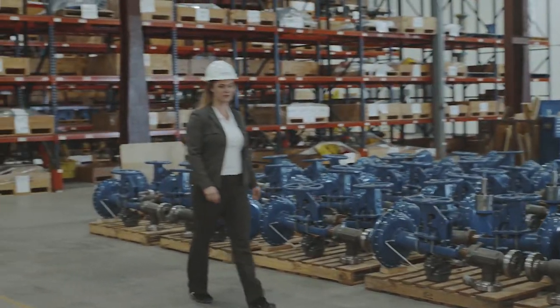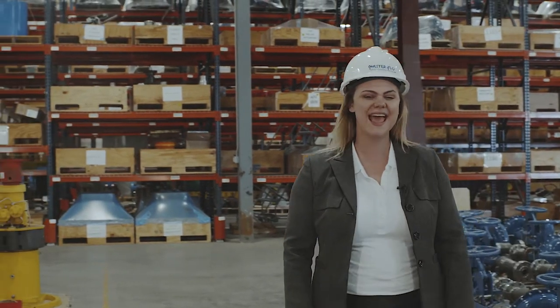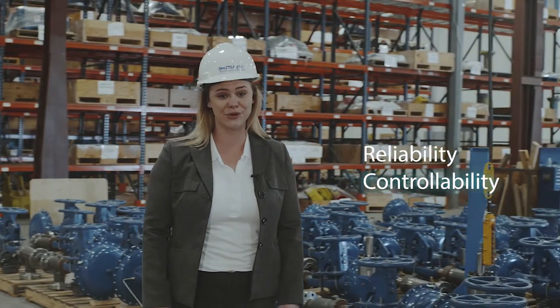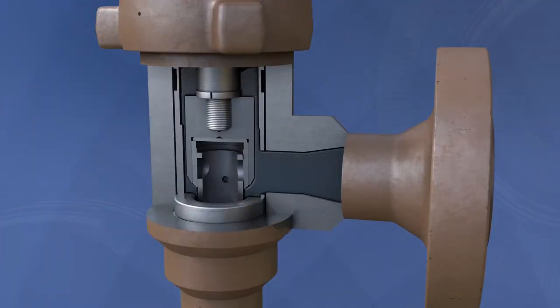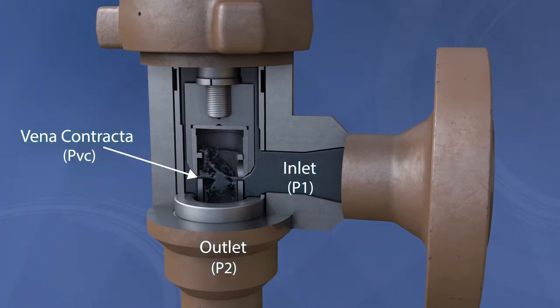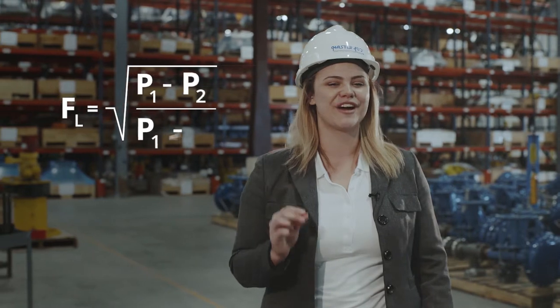Custom trims allow elimination of the need for parallel valve operation, thereby reducing maintenance while increasing reliability and controllability. In production, only inlet and outlet pressure values are measured. However, inside the valve at the throttling point, the pressure is much lower. This is designated as the vena contracta pressure — an important factor of the choke valve selection process, along with liquid pressure recovery.